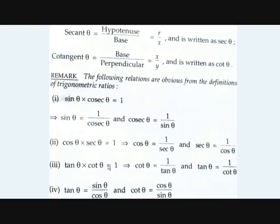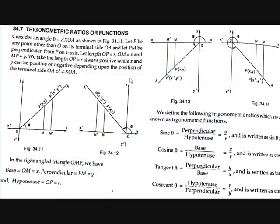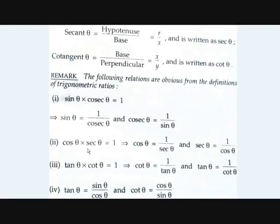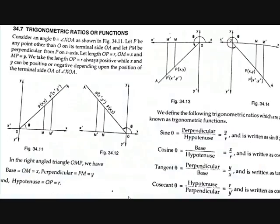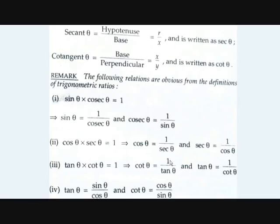Tan theta multiplied by cot theta equals 1. Cot theta is base by perpendicular and tan theta is perpendicular by base. Also, tan theta equals sin theta by cos theta — if you multiply by 1 by hypotenuse in numerator and denominator, it becomes perpendicular by hypotenuse divided by base by hypotenuse, which is sin theta by cos theta. Similarly, cot theta equals cos theta by sin theta.